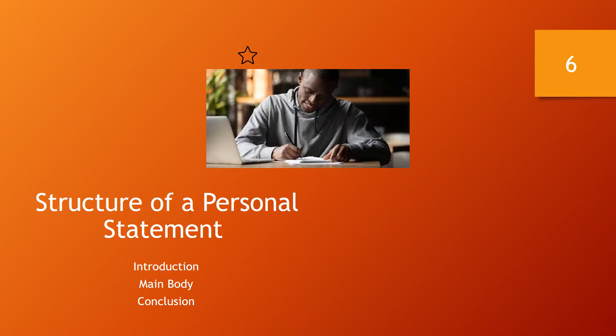Introduction: The introduction should be clear and concise. It should focus on academic background. Main body: Start by writing some examples about you. Avoid simply listing skills or qualities — always make sure you show how they are relevant to your future studies. Conclusion: The conclusion should summarize the key points of your statement. Make sure to remind the reader about your strengths.